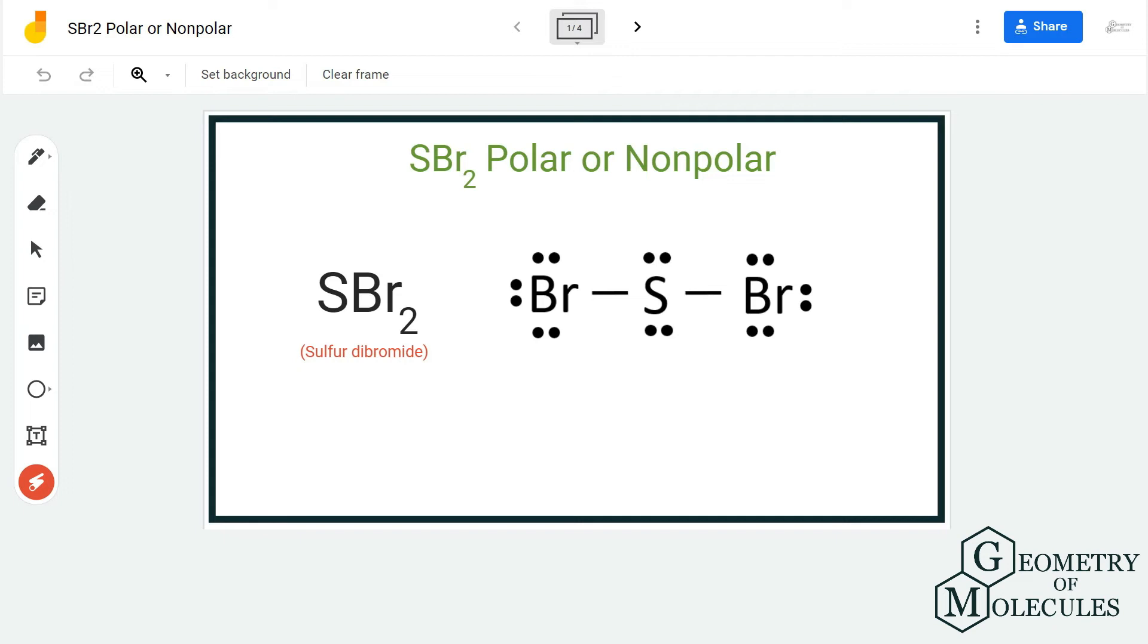Hi guys, welcome back to our channel. In today's video we are going to determine the polarity of SBr2 molecule. It's a chemical formula for sulfur dibromide. To find out whether this molecule is polar or non-polar, we are first going to look at its Lewis structure.